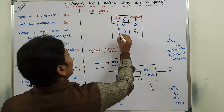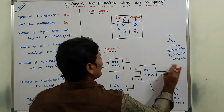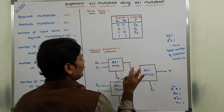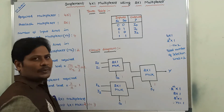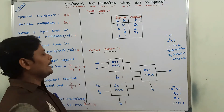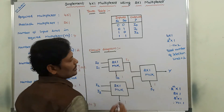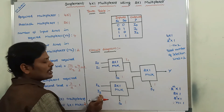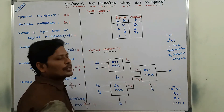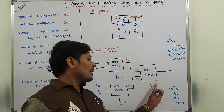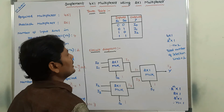Last case: S1=1 and S0=1. Both are 1. Whenever S0=1, it selects the I1 input and sends it as the output from the first MUX. In the second first-level MUX, S0=1 selects I3. Now S1=1 means the second-level MUX selects its second input, which is I3. Therefore, when S1=1 and S0=1, the output is I3.